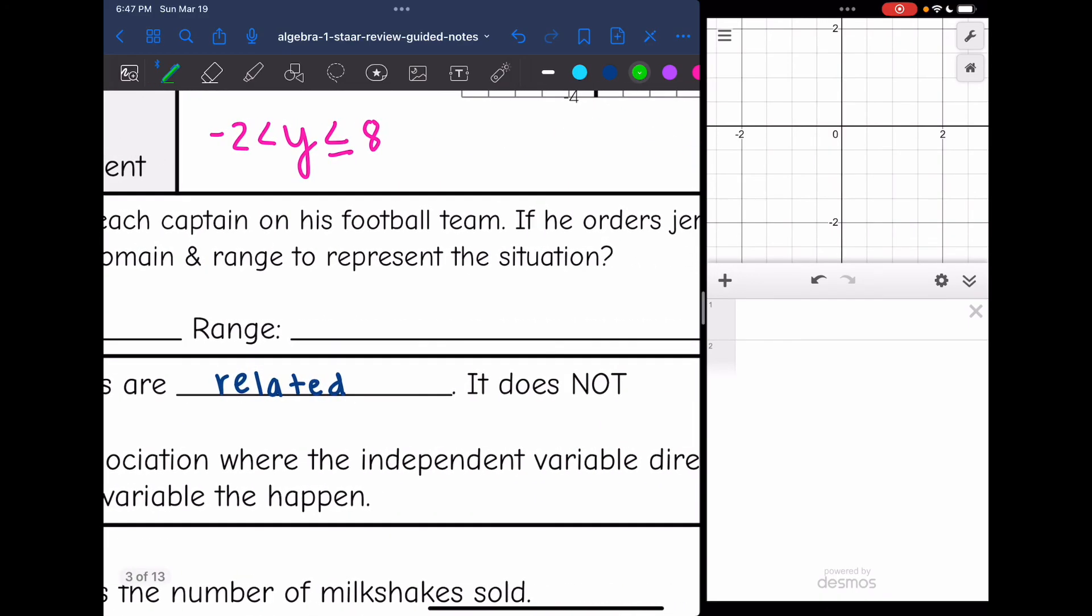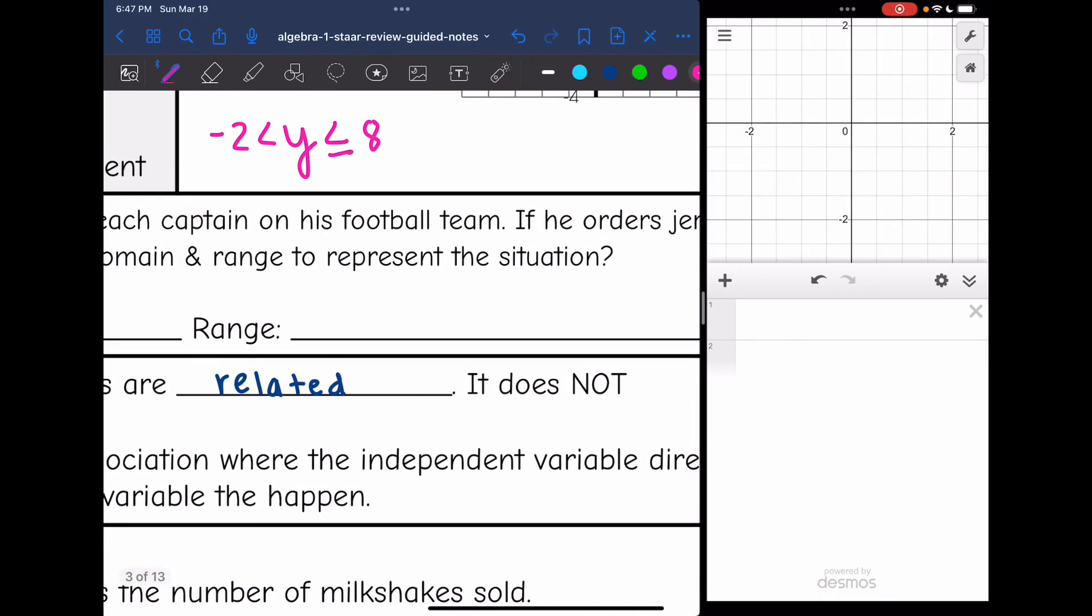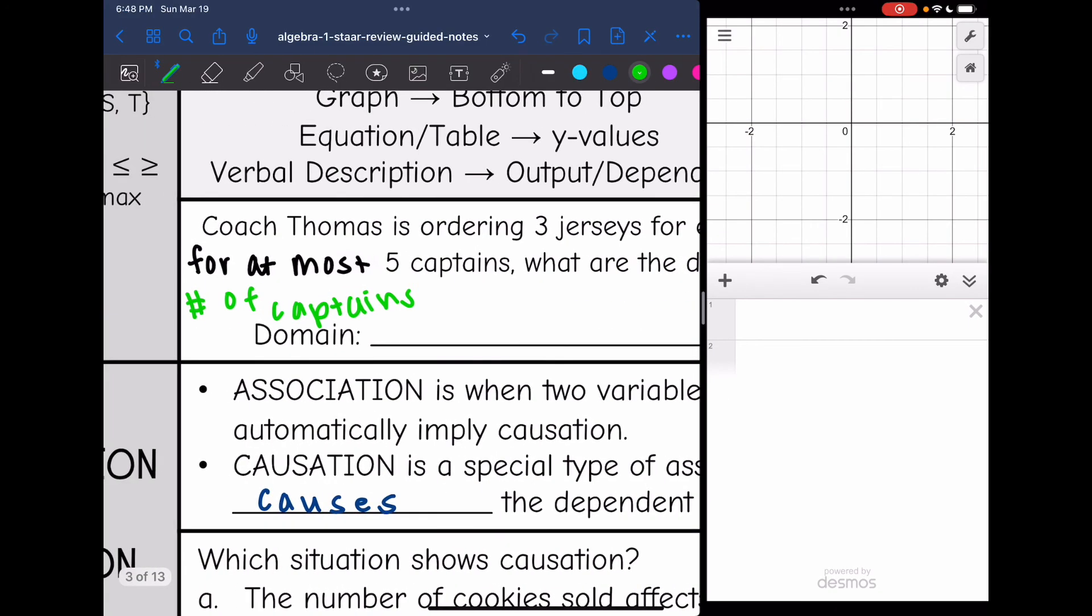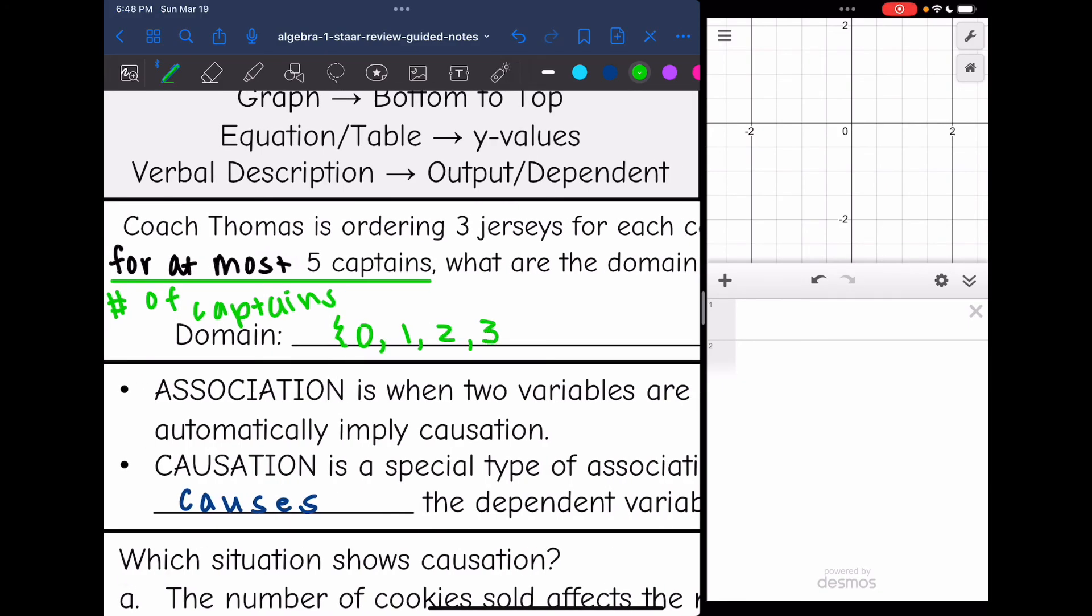And let's think about what the domain and range would be. So he's ordering three jerseys for each captain. So the number of jerseys is going to depend on how many captains he has. So the domain is going to be the number of captains. Let's start with the domain, which is the number of captains. It tells us he's going to order for at most five captains. So that could be 0 captains or 1 or 2 or 3 or 4 or 5, but not more than 5. So there's our domain.